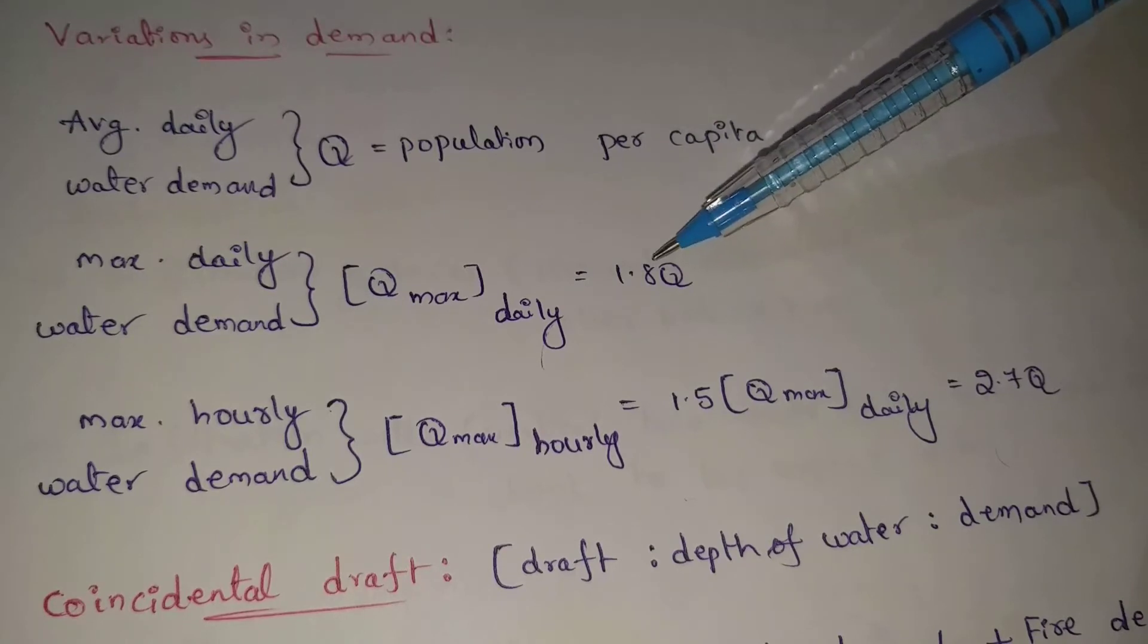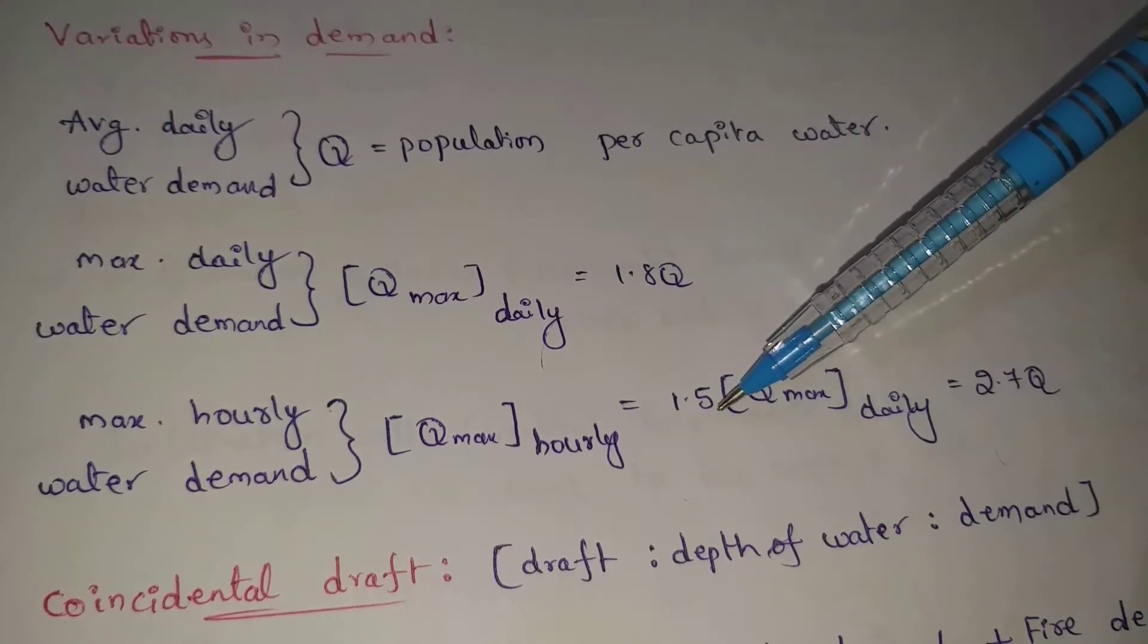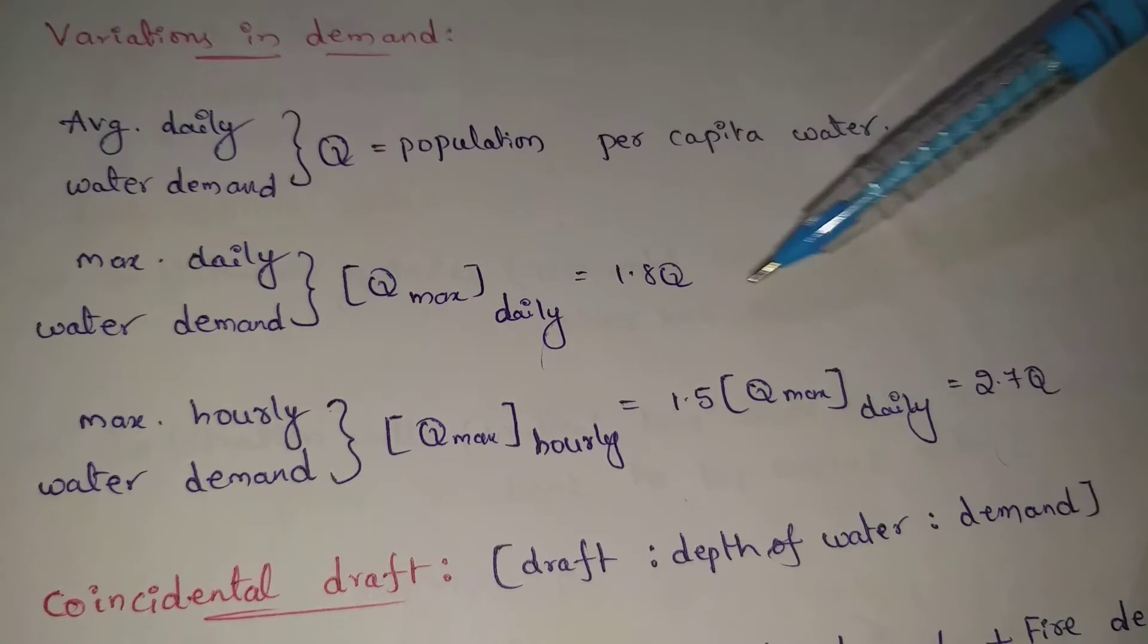Q max daily value means 1.8Q. So, 1.5 into 1.8Q equals total 2.7Q.